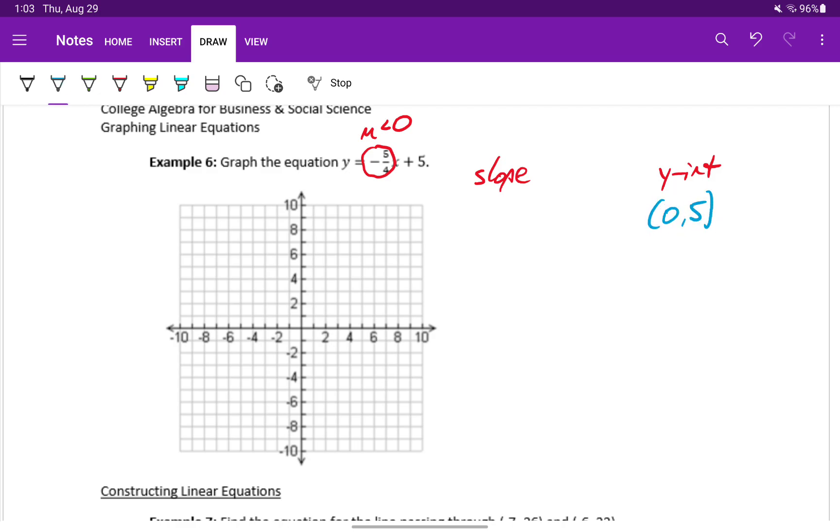In this case, our y-intercept will be 0, 5. Our slope is still rise over run, but now that value is negative 5 fourths, meaning we have to do something with that negative. There are two ways to approach this. One is to rewrite this as negative 5 over 4, because that negative out front only applies to the numerator or the denominator.